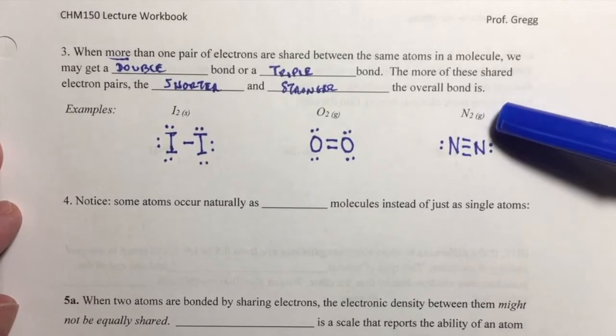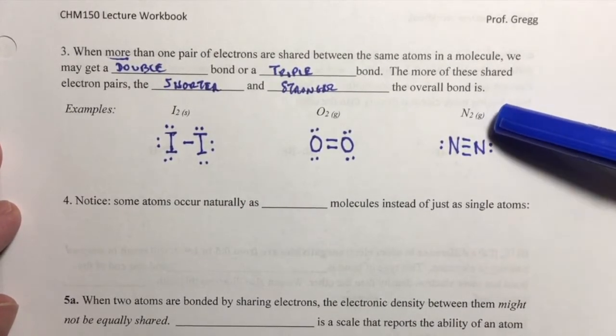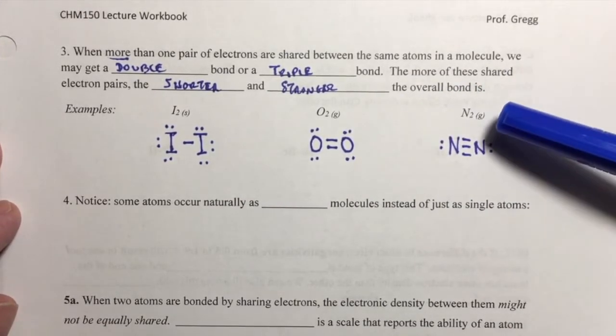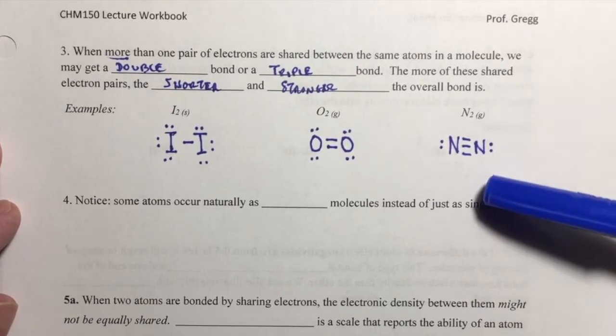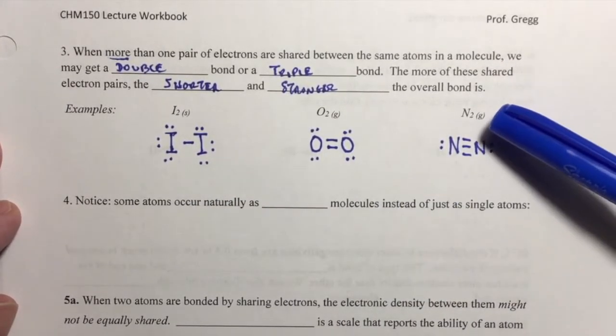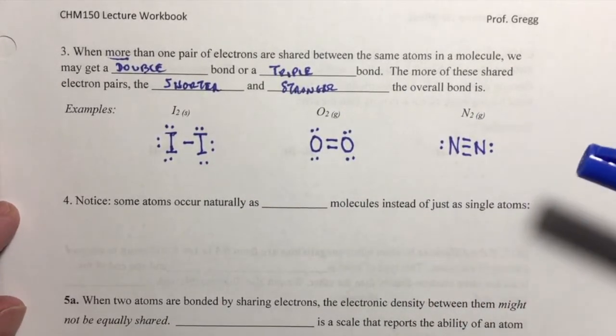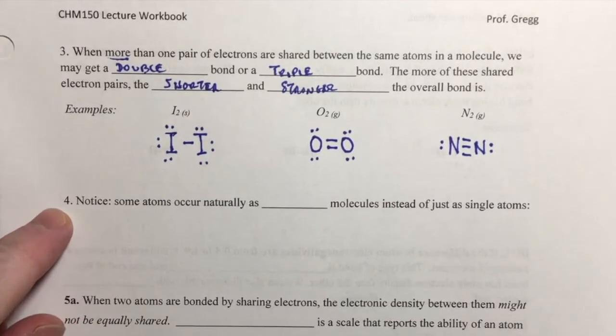This is a good point to take a moment and talk about these molecules that you see here. These are covalent molecules, but they are the covalent molecules for pure elements because you see that there's no other element in that molecule. These are covalently bonded species, and you notice they occur diatomically with two atoms bonded.